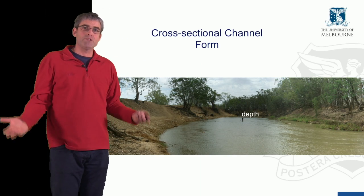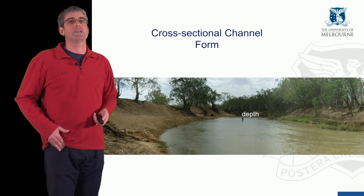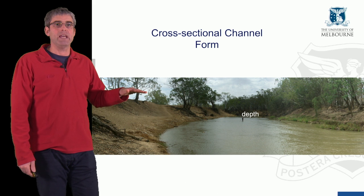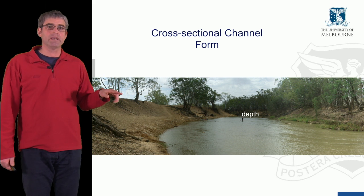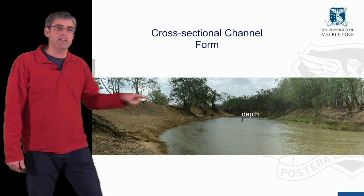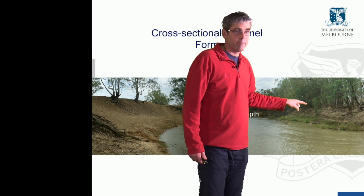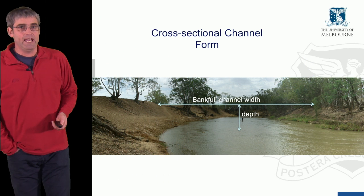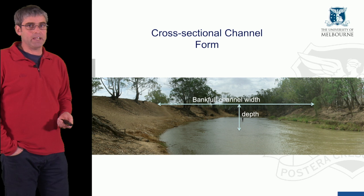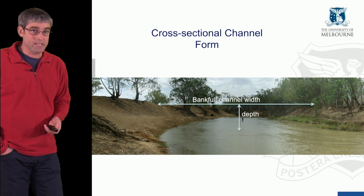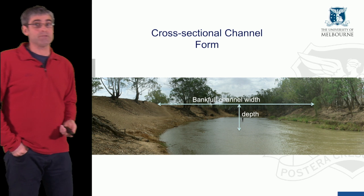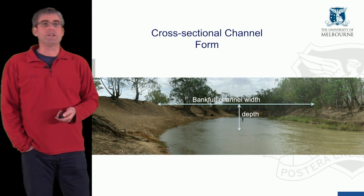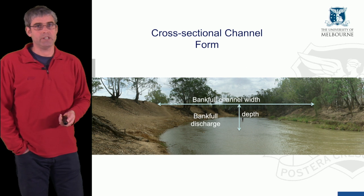The next thing to consider when characterising a river is the cross-sectional channel form. We start by defining a bankfull channel level — the top of the left bank and the right bank — and draw a line between those two levels to define the bankfull channel width and bankfull channel depth. If we know Manning's roughness coefficient, the channel gradient, and the shape of the cross-section, we can also calculate the bankfull discharge using Manning's equation.